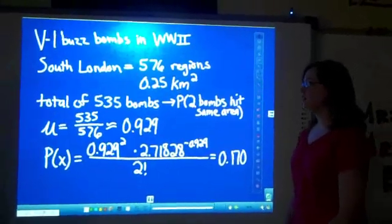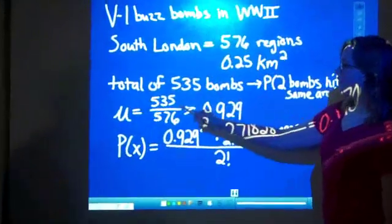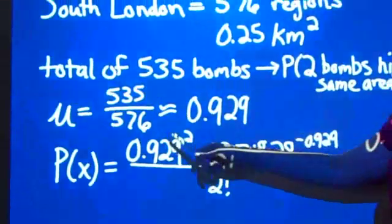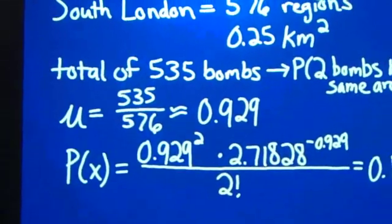To find the mean, we took 535 bombs divided by the total number of regions, which gave us 0.929.